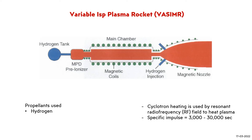Hydrogen propellant can be injected into the plasma exhaust for cooling purposes. The magnetic nozzle can control the thrust by varying the nozzle configuration. The specific impulse can be varied by changing the RF heating power, ranging from 3000 to 13000 seconds. This enables changing the thrust and the specific impulse independently of each other, allowing the performance to be tailored to a specific mission.